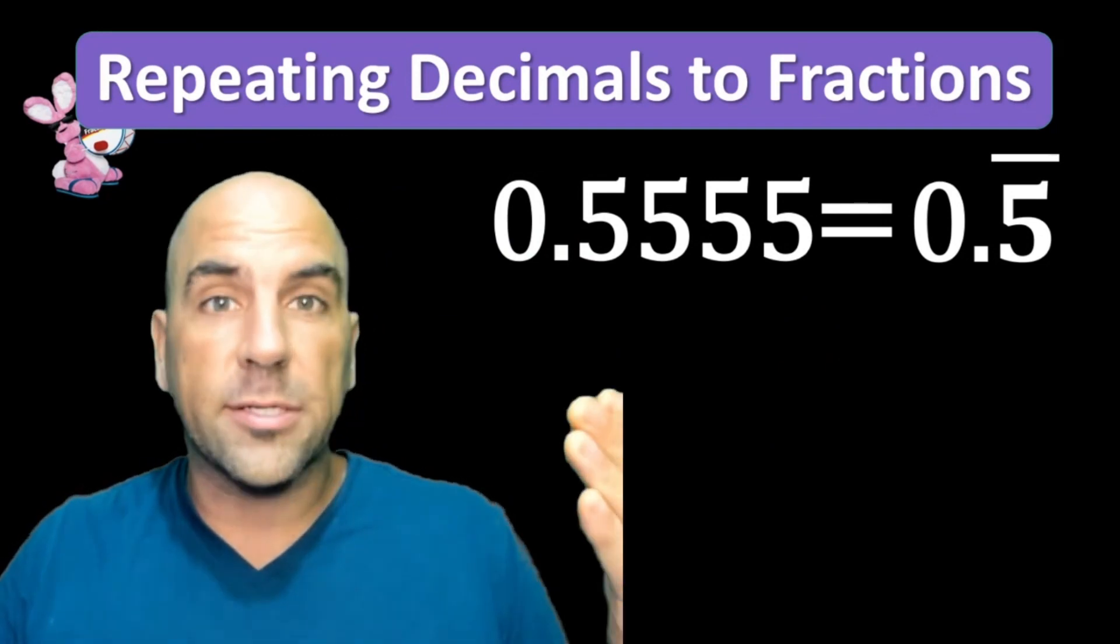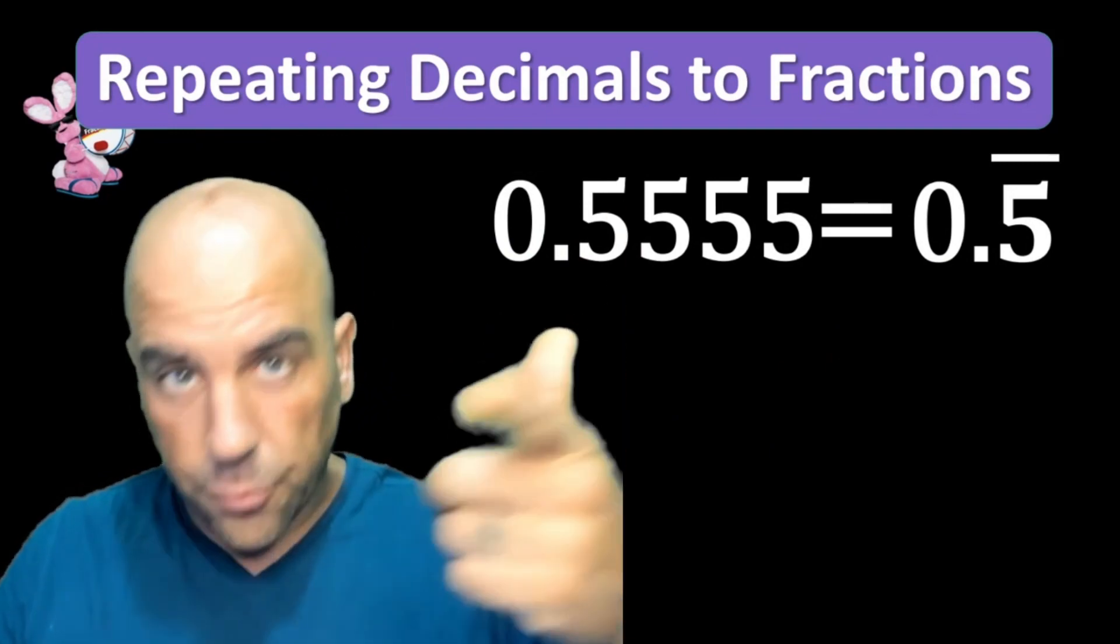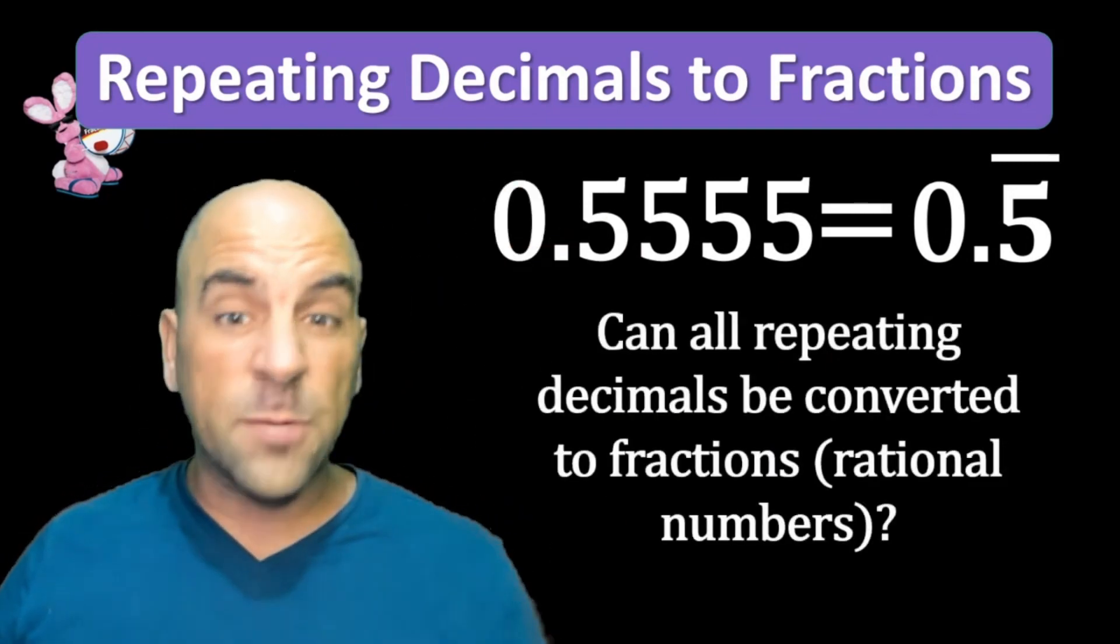If two numbers repeat, the line goes over two numbers. If three numbers repeat, you get the idea. So can all repeating decimals be converted into fractions? Are they rational numbers?